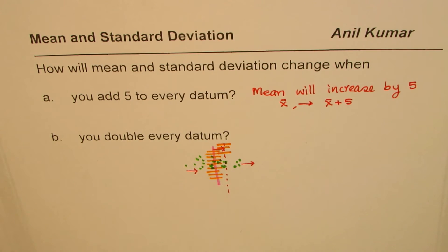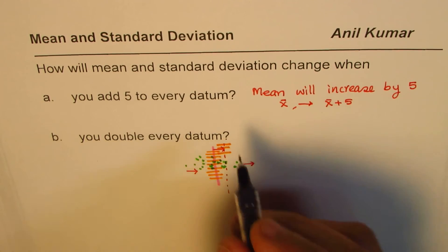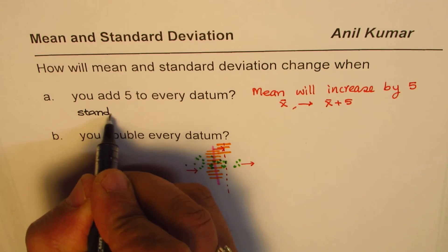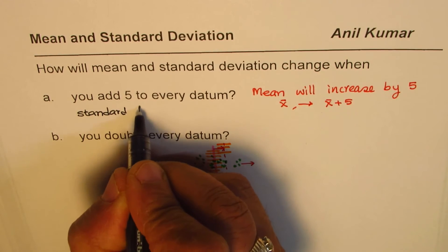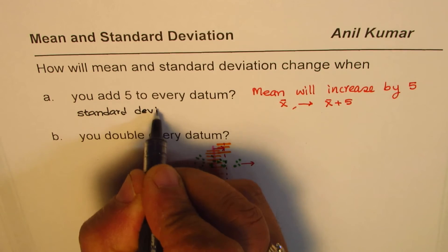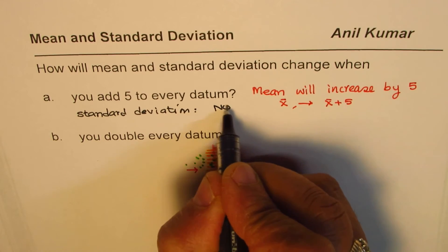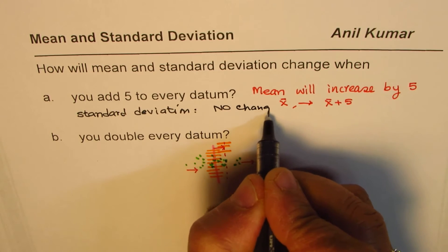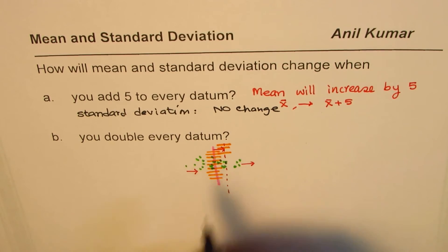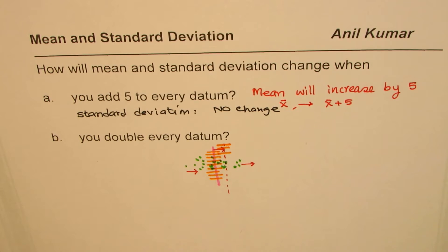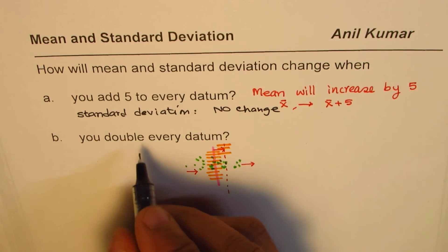So if you add 5, what do you expect in standard deviation? There will be no change. There will be no change since it is around the mean. With reference to mean, it is not going to change, so its value will not be affected. So that is part A.